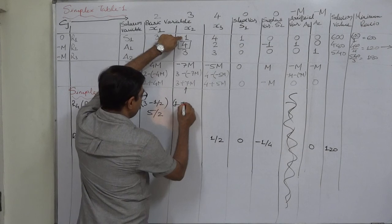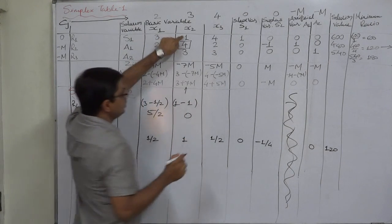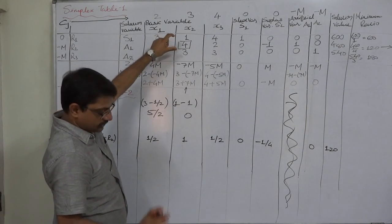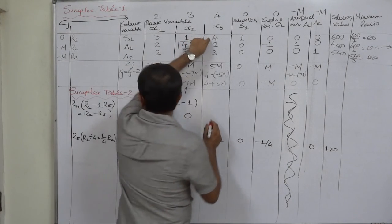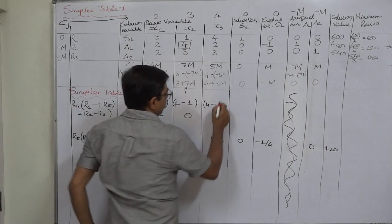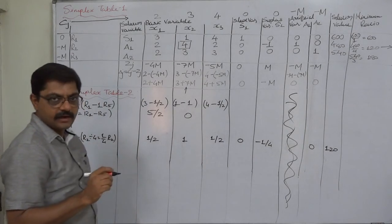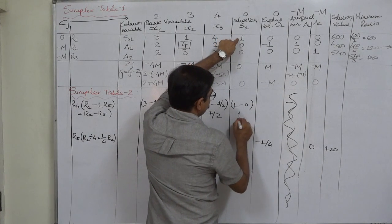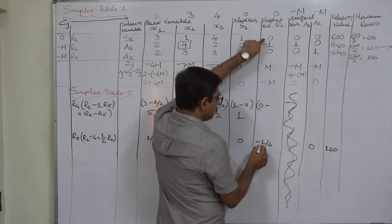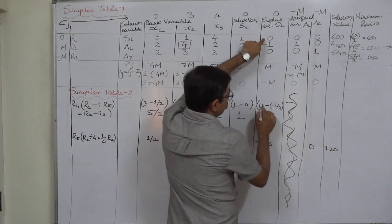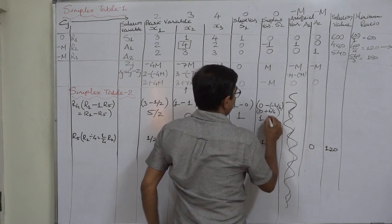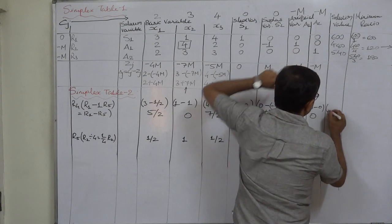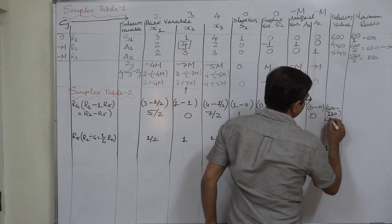r1 is 1 here minus r5 which is also 1, giving 0. Notice that in the next table there will always be 0 in the place of the key element in the row above or below the key row. Next element: r1 is 1, minus r5 which is 0, gives 1. Then r1 is 0, minus sign per formula, minus 1/4 is r5, so 0 minus minus 1/4 equals 0 plus 1/4 = 1/4. Then 0 minus 0 = 0. For the solution value: 600 is r1 minus 120 which is r5, so it is 480.